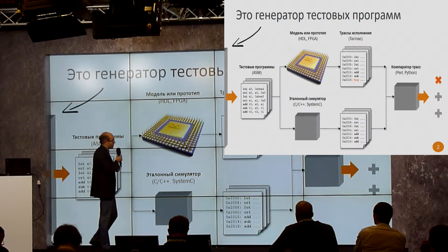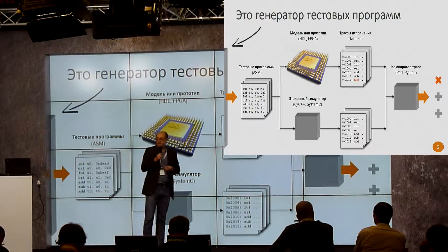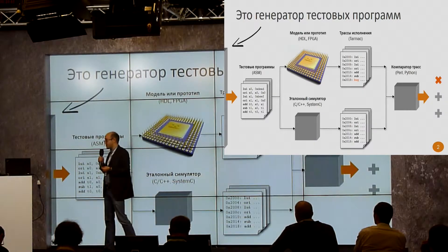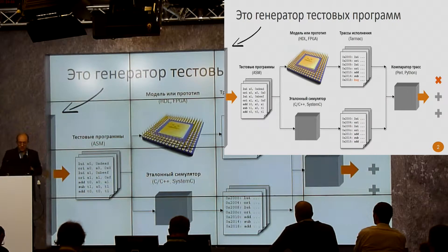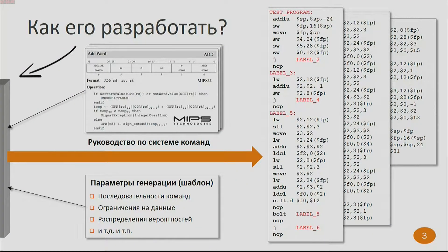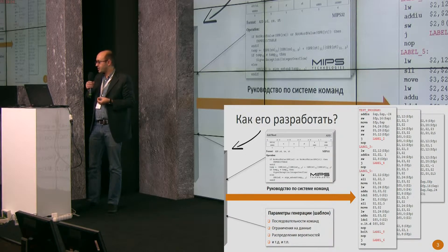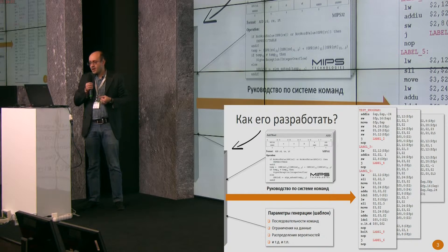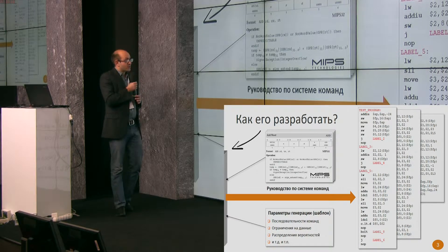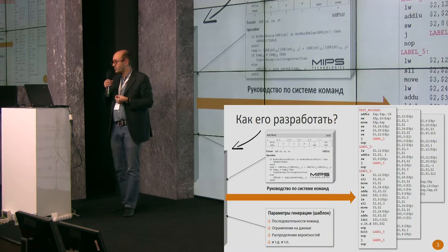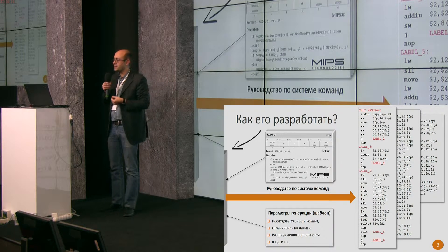There is a special program called the tracing comparator. If there is a mistake or an error, we try to understand how to develop this test generator. It's obvious that to develop a test generator for any architecture, you need information about the architecture to represent it in the generator. We need to think about how to process this generation and have parameters for that. All generators differ by what kind of information is presented and how it's processed.